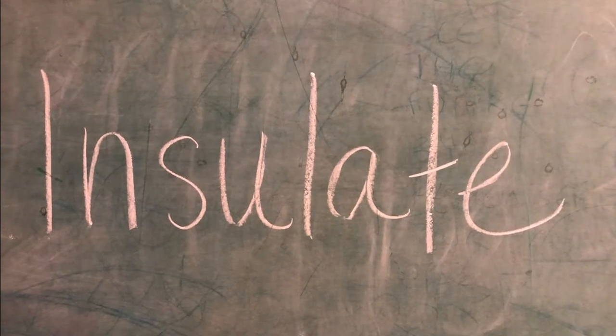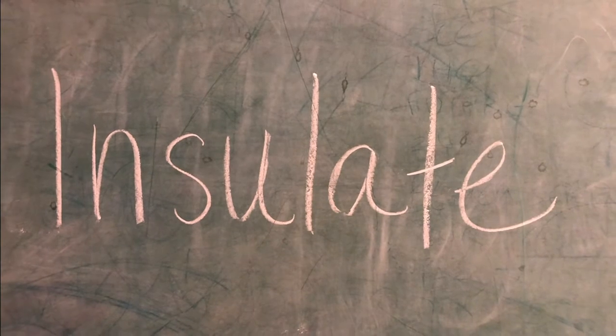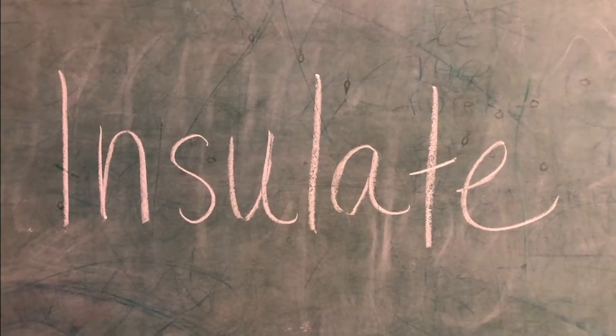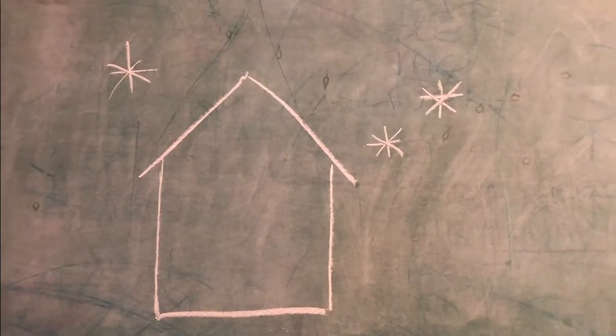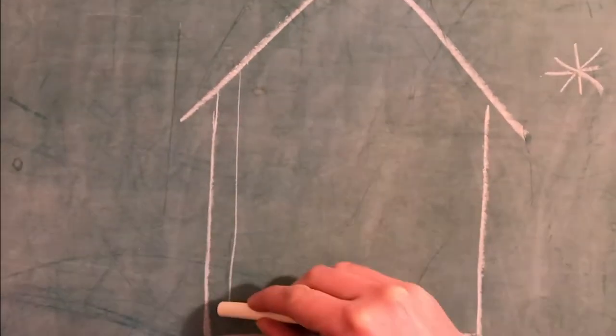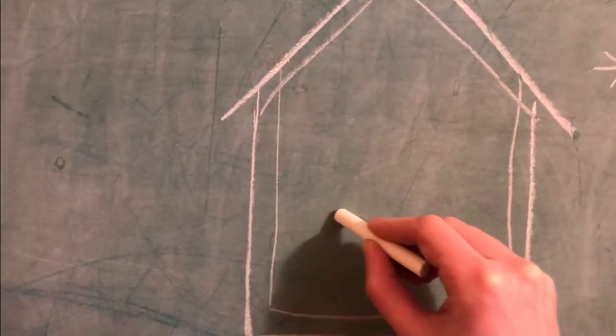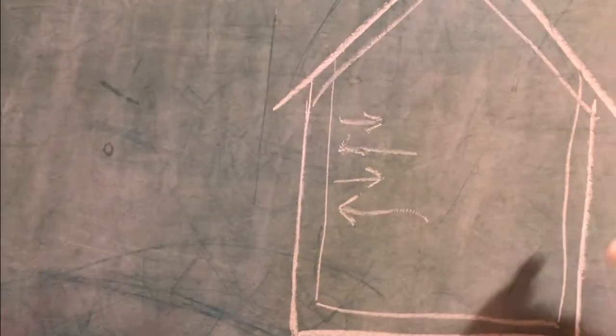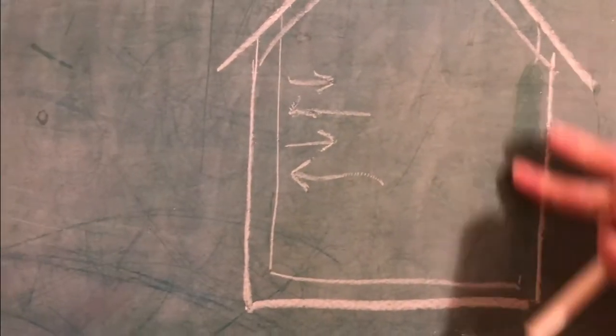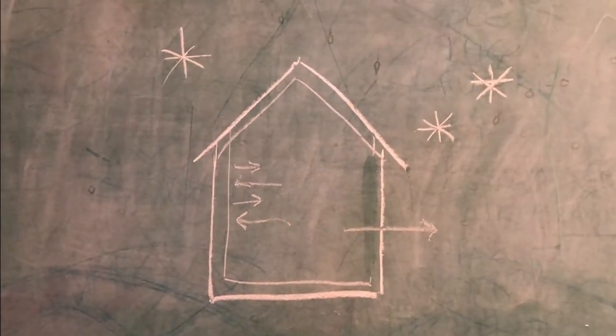To insulate just means to prevent the transfer of electricity, heat, or sound. In our case we will be insulating against heat transfer. We also use insulation like this in buildings and the walls and roofs. Insulation can help to keep heat trapped inside so that it can feel warmer for us. Buildings that do not have insulation can feel drafty when the heat escapes to the outside.